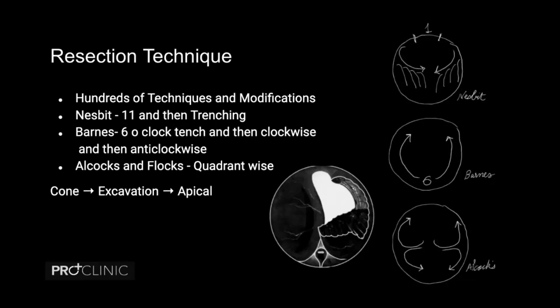Barnes' technique is the one we commonly do. It involves first making a trench below — cutting a channel in the posterior aspect from about 5 o'clock to 7 o'clock — because many say this improves irrigation and backflow for better vision. We take care of the vessels which are the arteries of the bladder neck, then go clockwise on the right lobe and anti-clockwise on the left lobe, then do the apical part. Another technique by Alcock and Flocks involves making a cut at 3 o'clock, taking the upper part of the lobe first then the lower part, then making a cut at 9 o'clock and taking a clockwise approach to the anterior part and anti-clockwise to the posterior — that's how they finish.